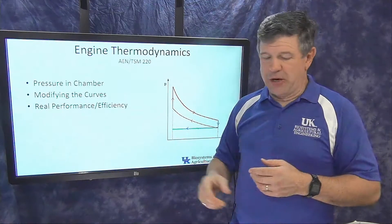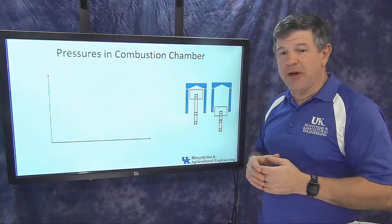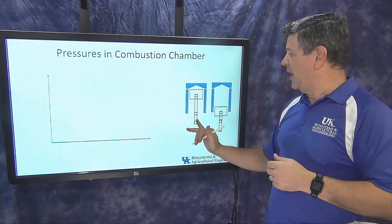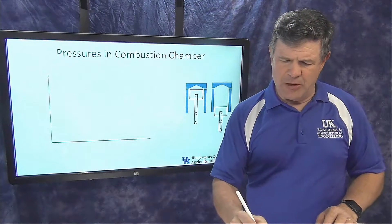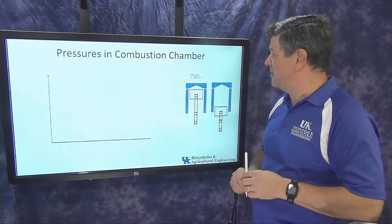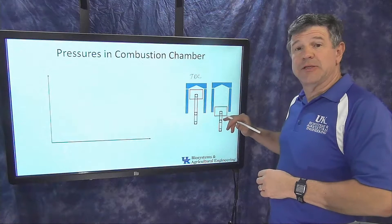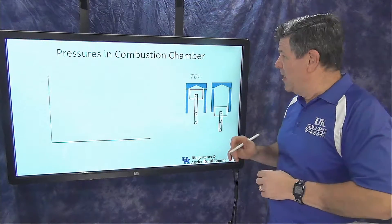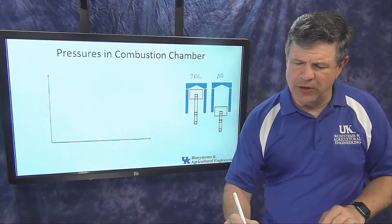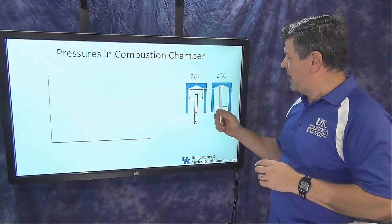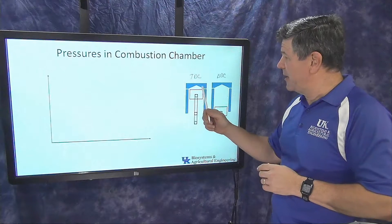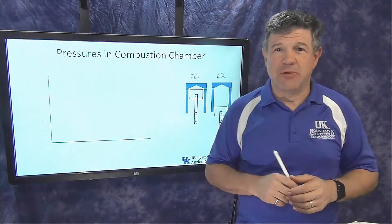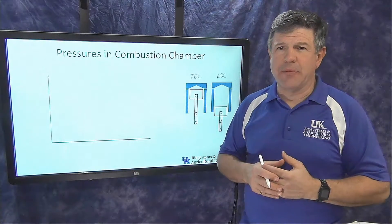Let's start by looking at the pressure in the chamber. What I've got here is a sketch of a piston shown in two different positions. On the left, the crankshaft and connecting rod are all in line, stretched out — the piston is way up high, at top dead center (TDC). On the right, the piston is all the way down — the crankshaft has pulled it as far as it can go, so this is bottom dead center (BDC). We're interested in what's happening in the space above the piston and want to start quantifying it, because this is important.